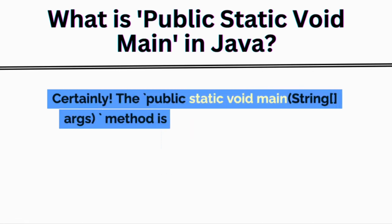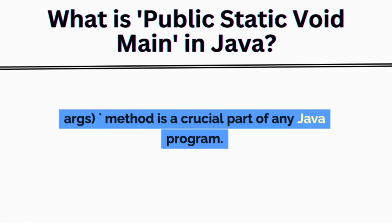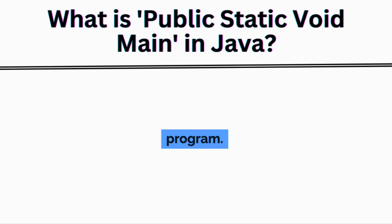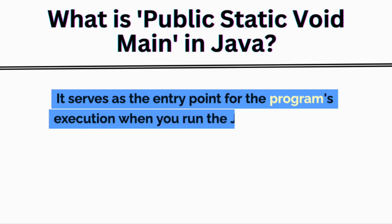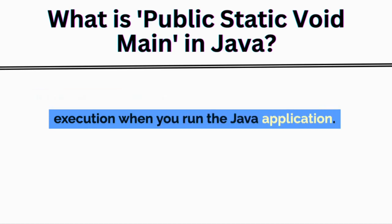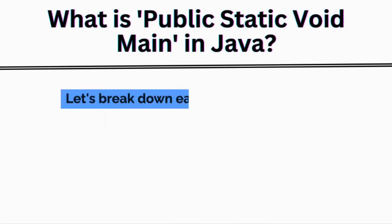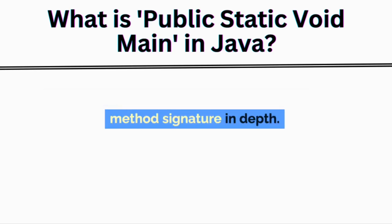The public static void main string method is a crucial part of any Java program. It serves as the entry point for the program's execution when you run the Java application. Let's break down each component of this method signature in depth.